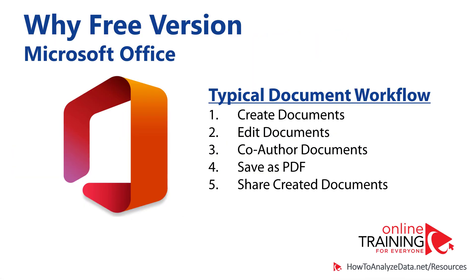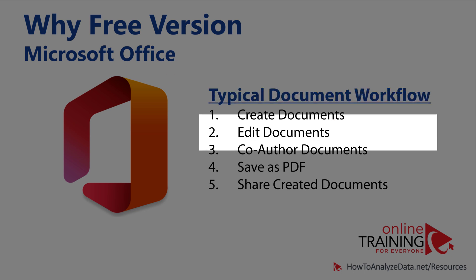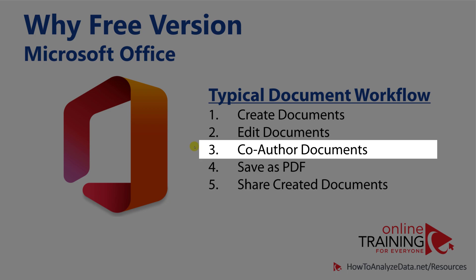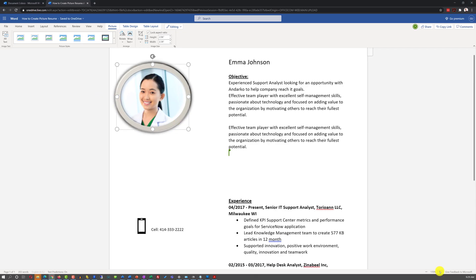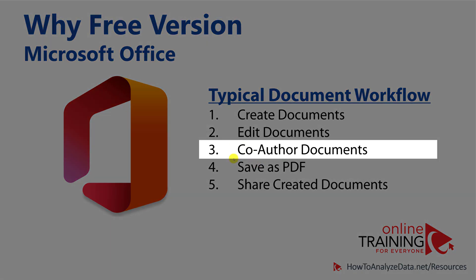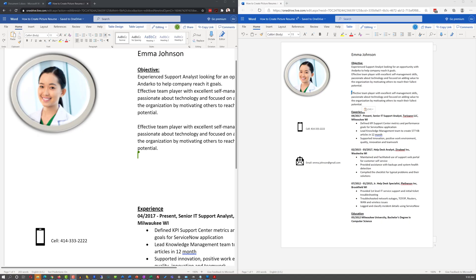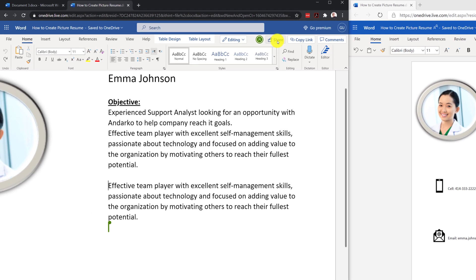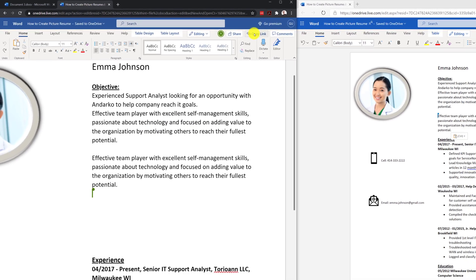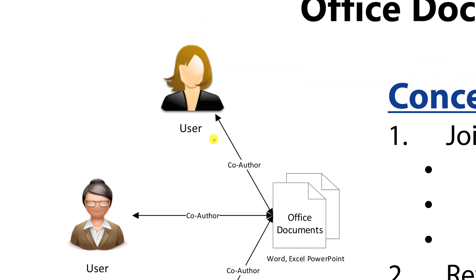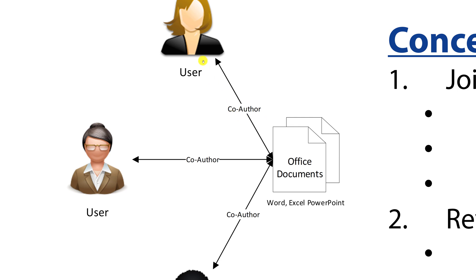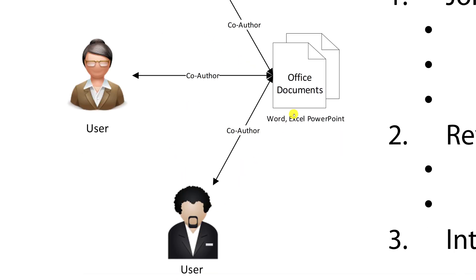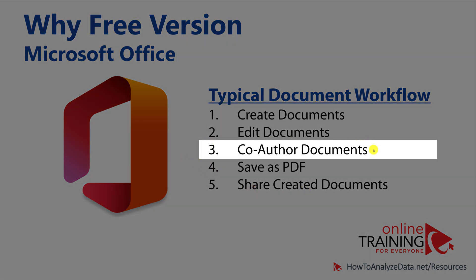To understand why the free version of Microsoft Office is better for some scenarios, let's look at the typical document creation and editing workflow. There is a very important co-authoring step in document workflows — you might start by creating or editing a document, but often you need to co-author it with other people, which means sending a link and asking others to edit. Co-authoring is much more effective when there is one shared copy in the cloud that multiple people can access and edit, making the free version of Microsoft Office very effective.